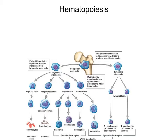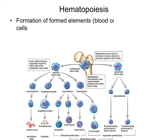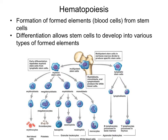Next, we discuss how blood cells are formed. Blood cells, or formed elements, derive from stem cells from red bone marrow. The formation of these blood cells occurs through a process known as hematopoiesis. During hematopoiesis, stem cells differentiate to become the different types of formed elements. You can see within the illustration that a stem cell, which originates from red bone marrow, differentiates to become the different types of formed elements.